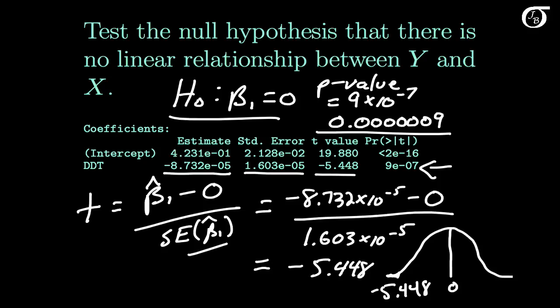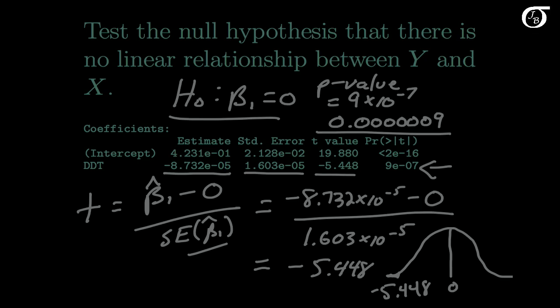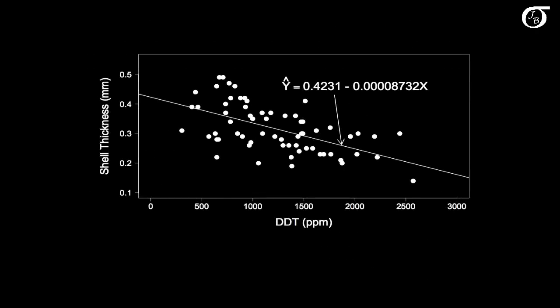So we have very strong evidence that the true slope is not 0. But what does that mean in the context of this problem? What that p-value is telling us is that it would be very, very, very unlikely to see a decreasing trend like this due to chance alone.